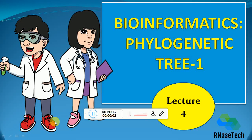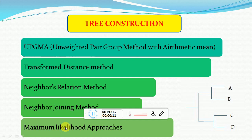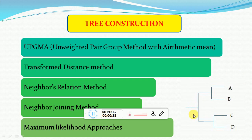Hello students, welcome to today's video about phylogenetic trees — this will be part one. A phylogenetic tree is a tree which shows the differences between two species, or how closely or evolutionarily related they are in nature. For example, A and B are closely related, C and D are related, and all four share a common ancestor. Basically, a phylogenetic tree shows the phylogenetic or evolutionary distance between two or more species.